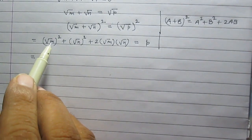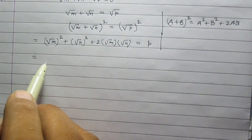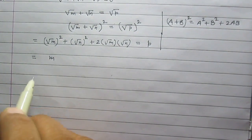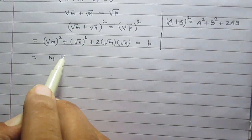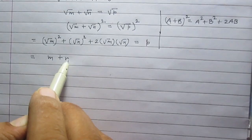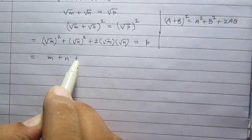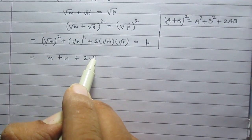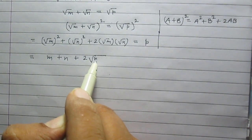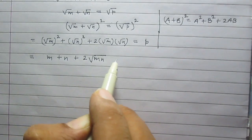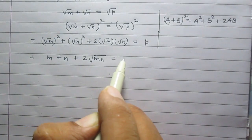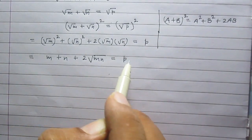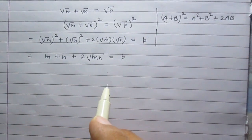So we get m plus n plus twice of square root of the product mn, all equal to p.